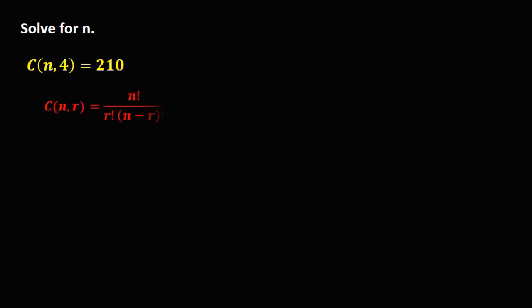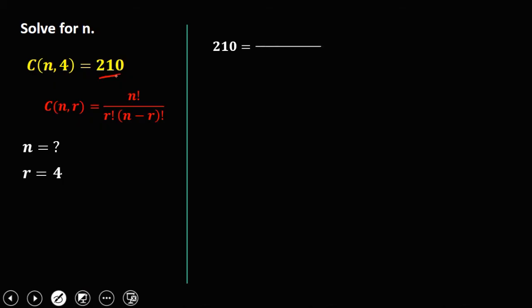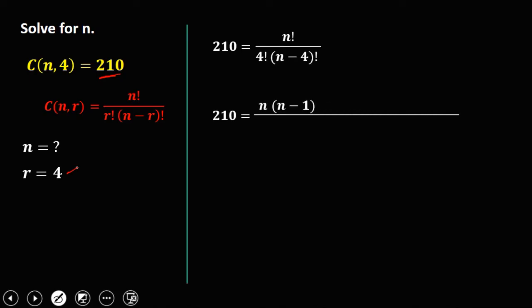For this next problem, R equals 4. Since the given equals 210, we have 210 equals n factorial over 4 factorial times (n minus 4) factorial. We rewrite n factorial as n times (n minus 1) times (n minus 2) times (n minus 3) times (n minus 4) factorial so we can eliminate the (n minus 4) factorial. Then 4 factorial equals 4 times 3 times 2 times 1, which is 24.